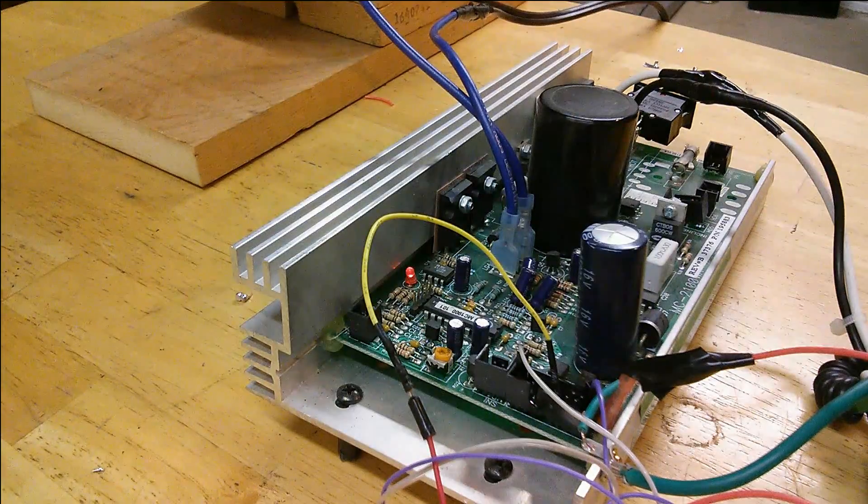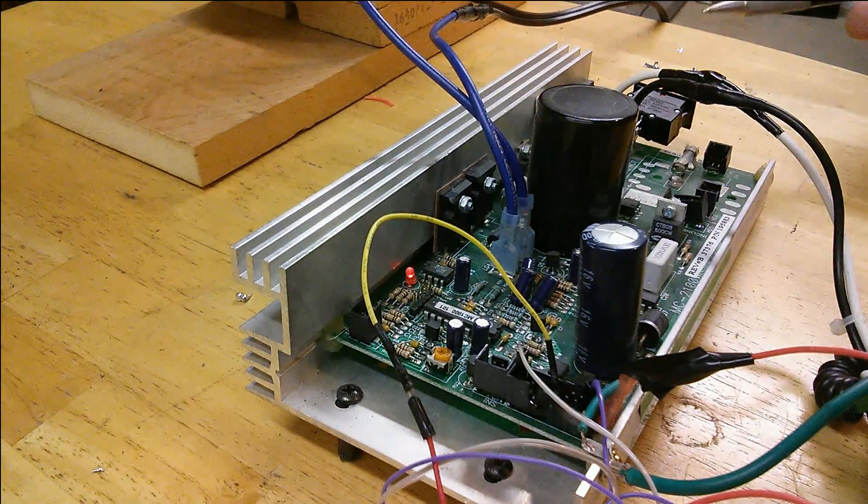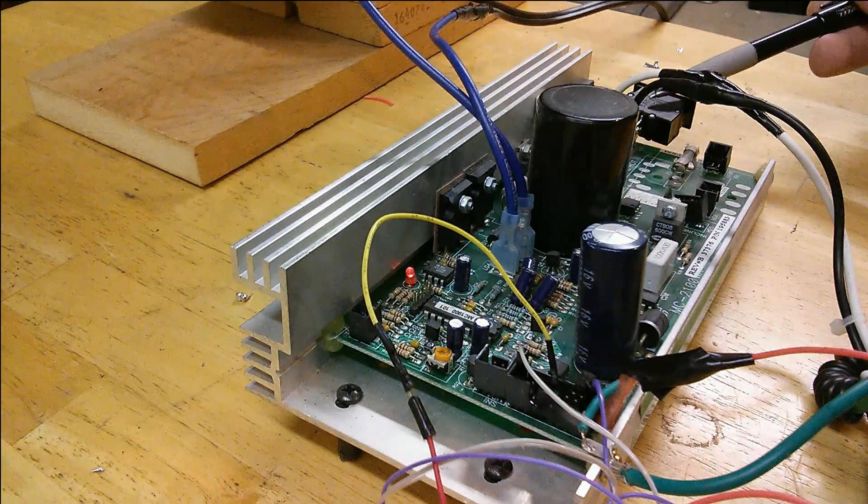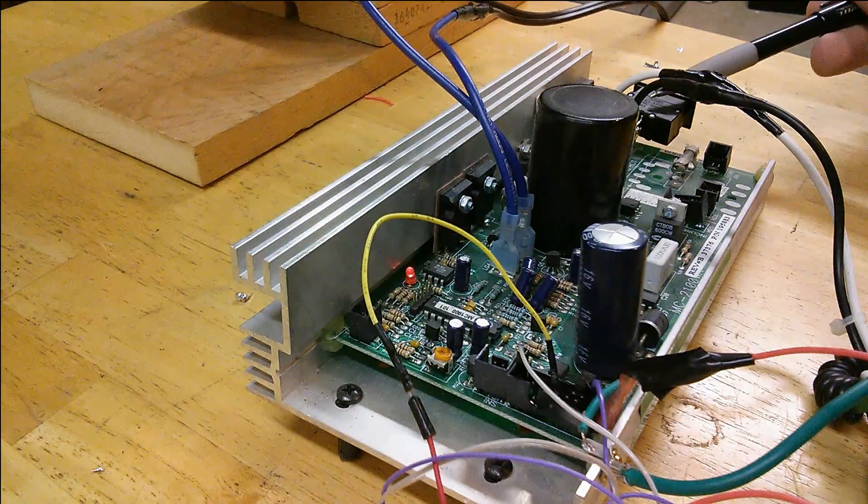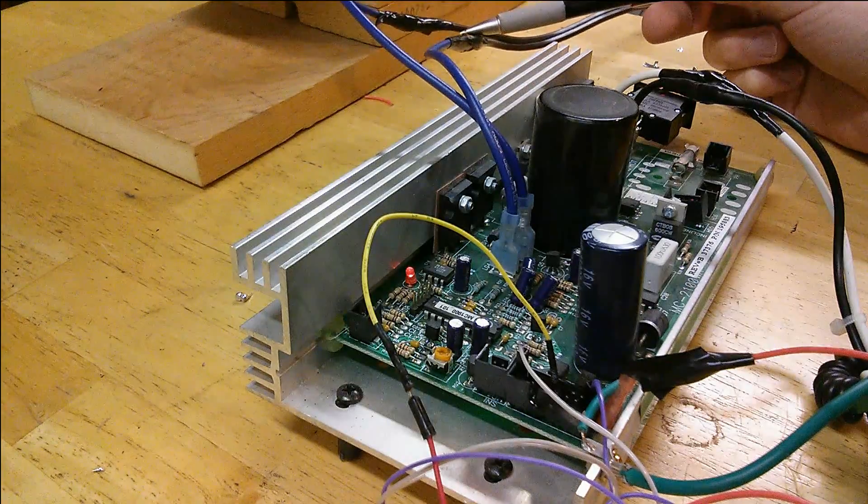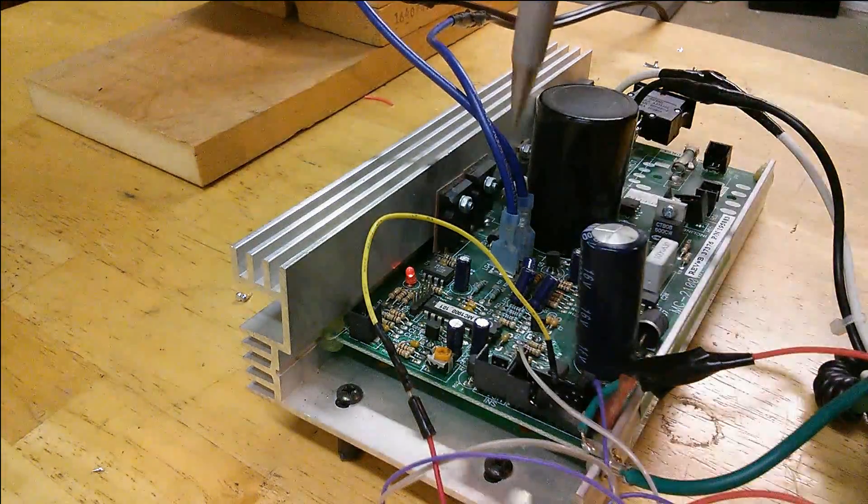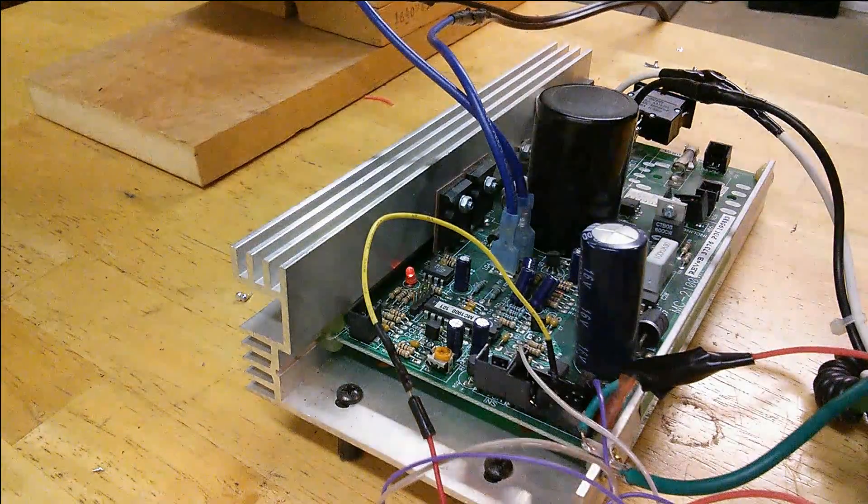So after a bit of experimentation, everything actually worked out pretty well. I ended up just soldering on the circuit breaker where it was wired on before, and then got some heavy gauge wires to wire up the DC motor to the A-plus and A-minus outputs.